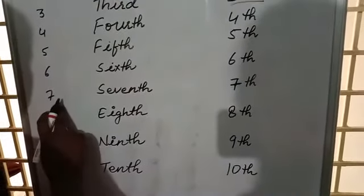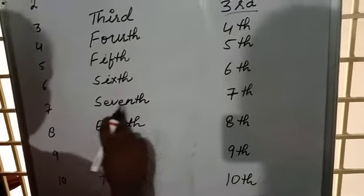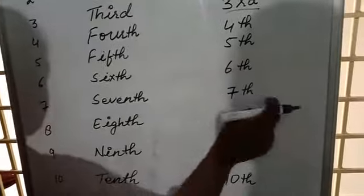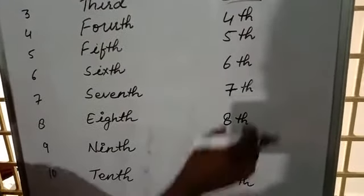Then number 7, S-E-V-E-N-T-H seventh. TH, 7-TH seventh. In short form we will write like this.